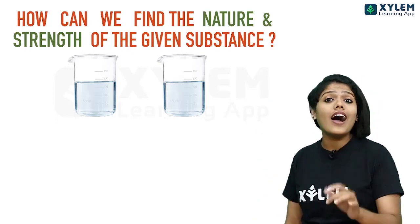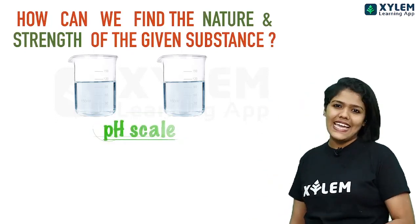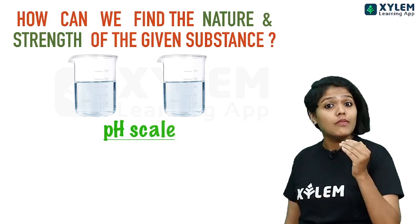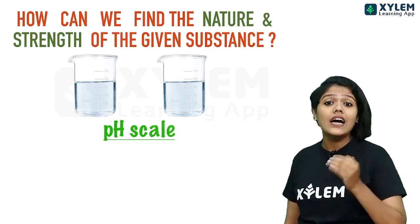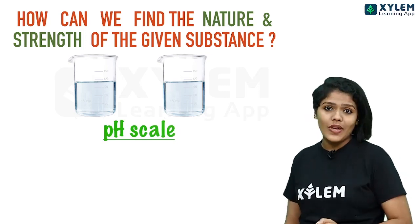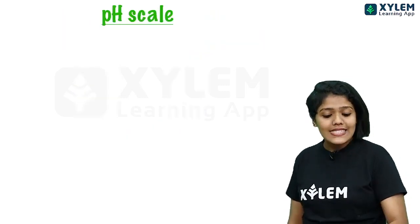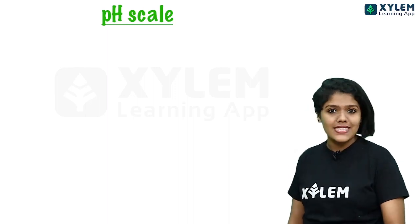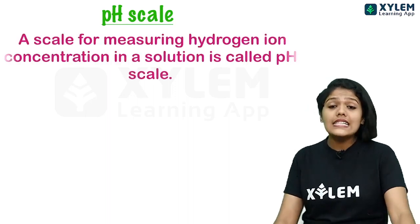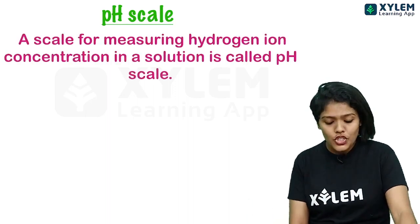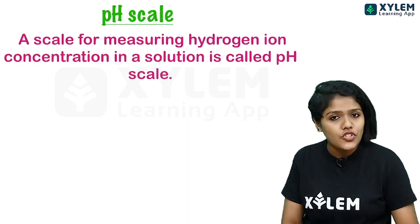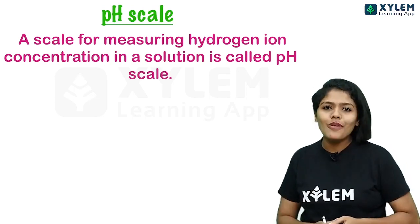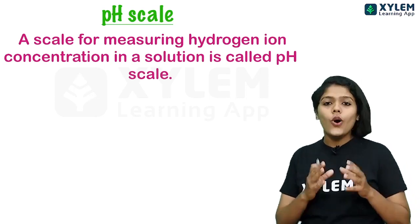Here we use the pH scale. The pH scale is important. A pH scale is a scale for measuring the hydrogen ion concentration of a solution.